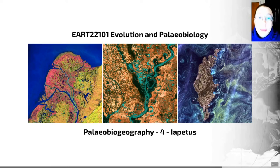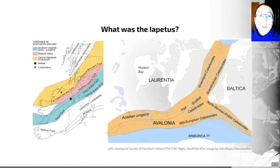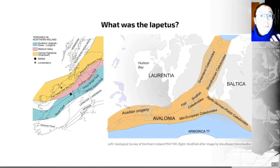This is a thing called the Iapetus ocean. So the Iapetus ocean is an ocean that previously existed and does no longer, and it's a really good illustration of one of the many ways that fossils can help us understand past continental configurations.